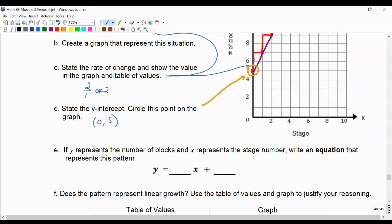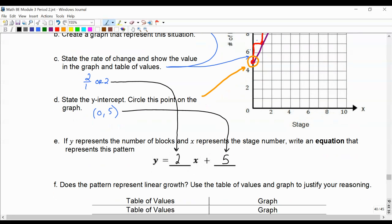And then what we saw in the previous lesson was that the rate of change goes here and the y-intercept goes here. Our rate of change is 2 and our y-intercept is 5. So we've got our equation y = 2x + 5.